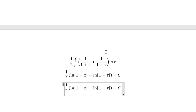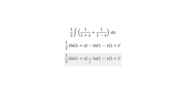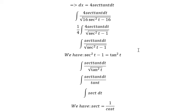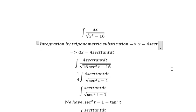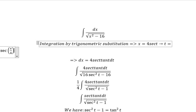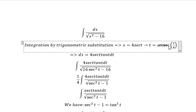We change z back to this one, and about t, we change back to t equal to arc secant x over 4. And this is the last one.